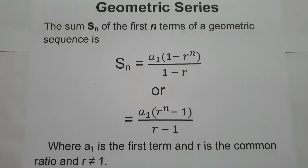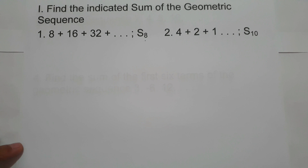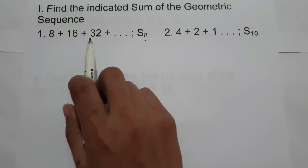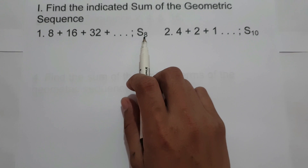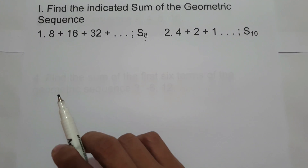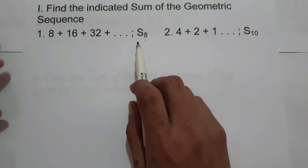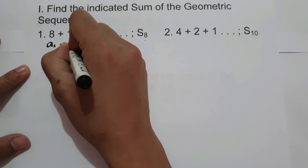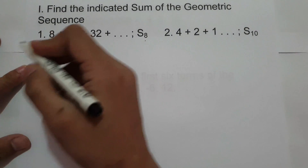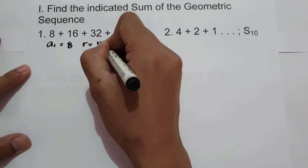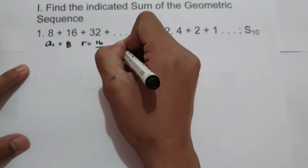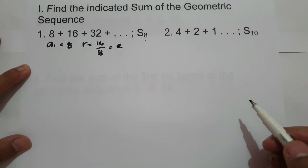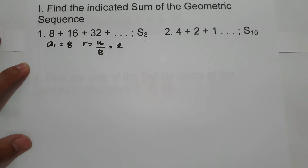Let's start with an example. On number 1, we are going to find the indicated sum of the geometric sequence 8 plus 16 plus 32, and we are looking for the sum of the first 8 terms. So we have a sub 1 equal to 8, and the common ratio is 16 divided by 8, which is 2.